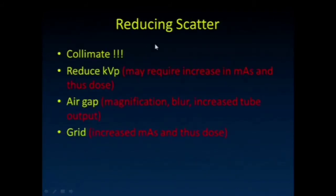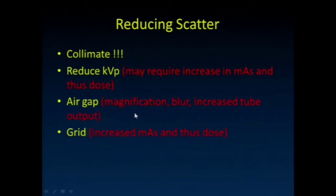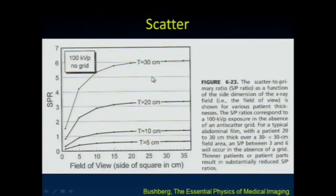As mentioned, we collimate, we reduce kV, and when possible we may use an air gap. The other technique I want to talk about is using a grid. But first, here's an example using phantoms of different diameters and different field-of-view sizes.